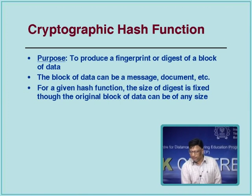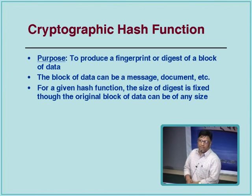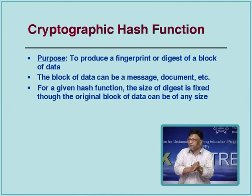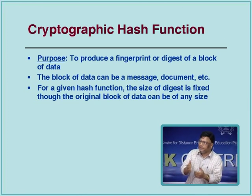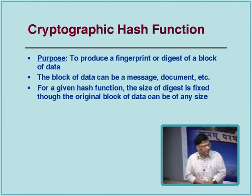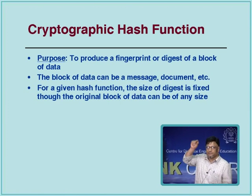The second pillar of e-security is the cryptographic hash, which produces a fingerprint or digest of a message. A message — which could be a document of any size — is reduced to a very small fixed size. Typical sizes: 128 bits in MD5, 160 bits in SHA-1. SHA-1 and MD5 are now somewhat insecure; newer hashes like SHA-256 produce 256 bits. Knowing the fingerprint, you cannot reverse it to deduce the original message.